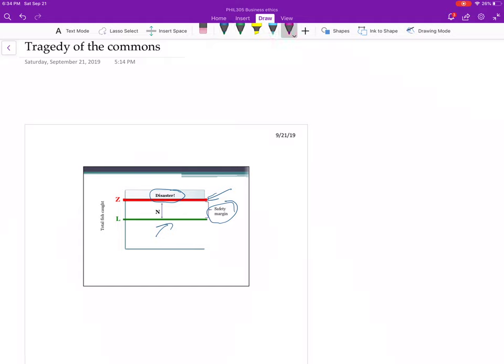To talk about the logic, let's draw out our little grid, just like we did with the prisoner's dilemma. Remember, there's only two futures that we care about. There's the disaster, which is where we go over the number, we go over Z, and there's the case where there's no disaster. So we go over Z here, and we stay under Z.